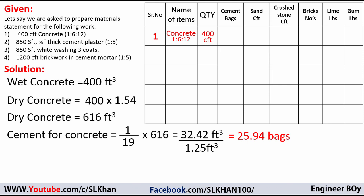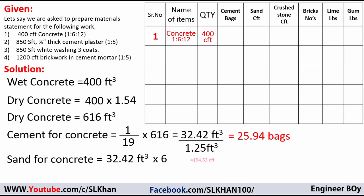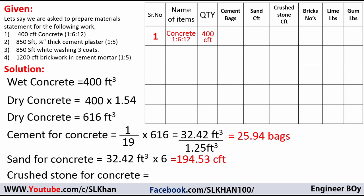For sand, we take the quantity of cement — 32.42 cubic feet — and multiply by the ratio of sand, which is 6 in the 1:6:12 mix (where 1 is cement and 6 is sand or fine aggregate). This gives us 194.53 CFT of sand. For crushed stone or coarse aggregate, we multiply the cement quantity by its ratio of 12, giving 389 CFT of crushed stone.